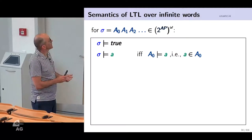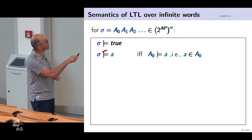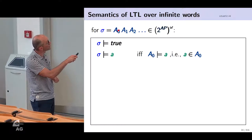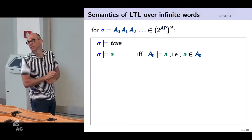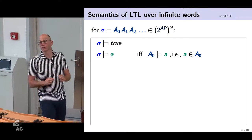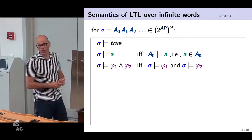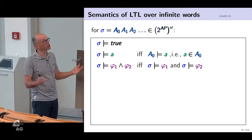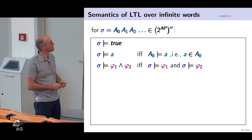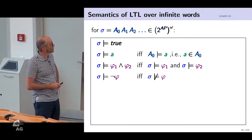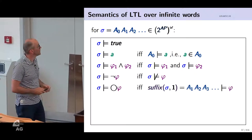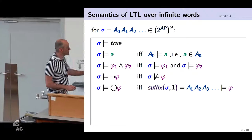The semantics is defined by structural induction. True is satisfied by every trace. An infinite trace satisfies atomic proposition 'a' if and only if a is a member of a_0, the initial set. Conjunction requires both conjuncts to be satisfied. Negation: sigma satisfies not-phi if and only if it does not satisfy phi.